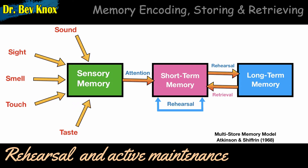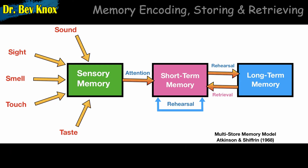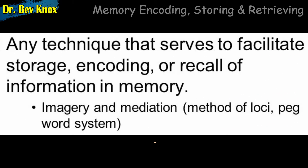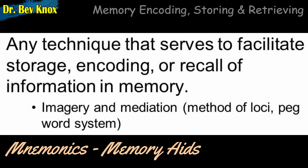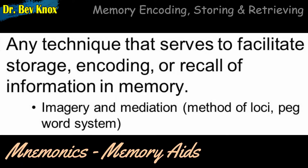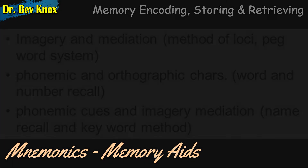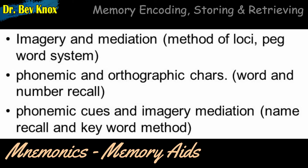Whether the transfer is made from short-term to long-term memory seems to depend largely on the kind of rehearsal that is carried out. By using organizational strategies called mnemonics, we can vastly improve our retention of information. Mnemonics are formal techniques of organizing information in a way that makes it more likely to be remembered. For instance, when a beginning musician learns that the spaces on the music staff spell the word FACE (F-A-C-E), or when we learn the rhyme '30 days hath September, April, June, and November,' we are using mnemonics.